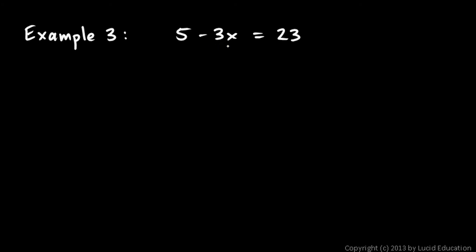So if I want to keep this term here that has the x in it, I need to get rid of this 5. This is a positive 5, so I need to subtract 5. And I subtract 5 from both sides. Whatever you do on one side of the equal sign, you also do on the other.